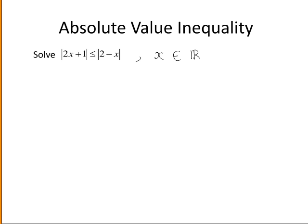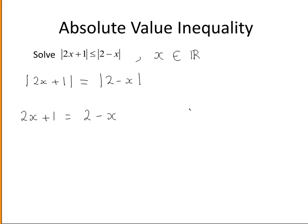The way we are going to solve this is to first have a look at where the absolute value of 2x plus 1 is equal to the absolute value of 2 minus x. There are two cases when the absolute values are equal: one is if they both have the same sign, and the other is when they have opposite signs.